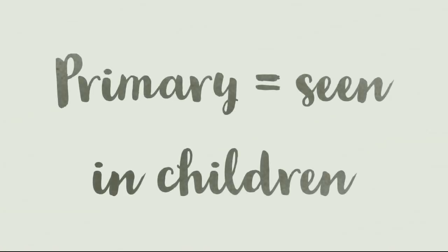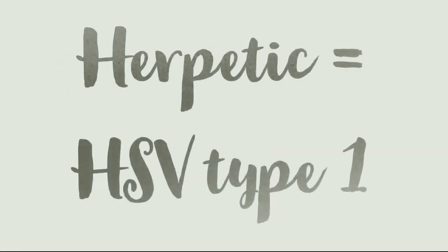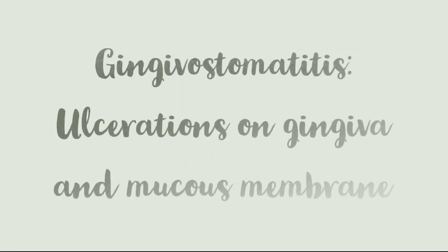As the name suggests, it is primary, so it is seen in children. It is herpetic, meaning the cause is herpes simplex virus type 1. Gingivostomatitis refers to ulcerations that are seen on the gingiva and the mucous membrane.